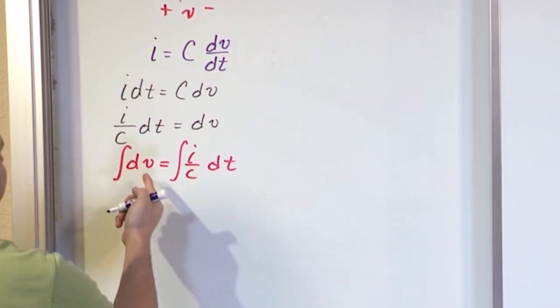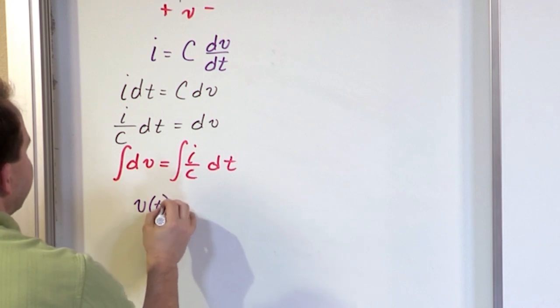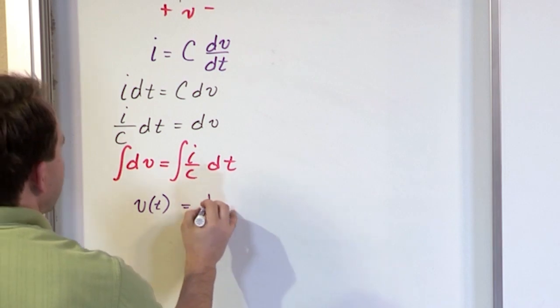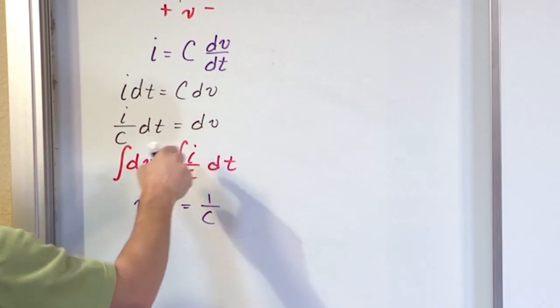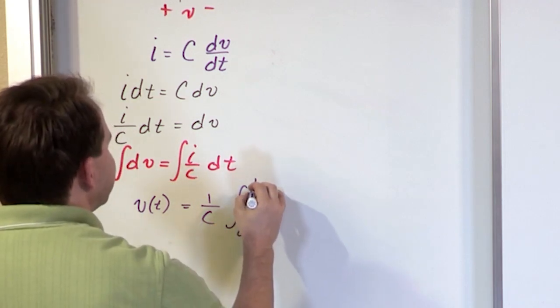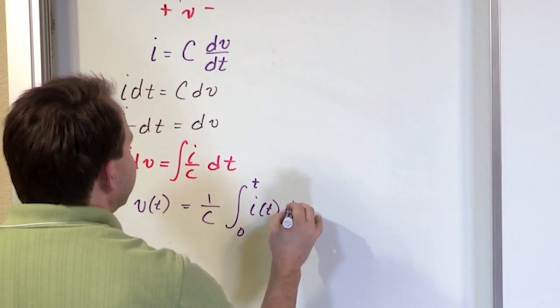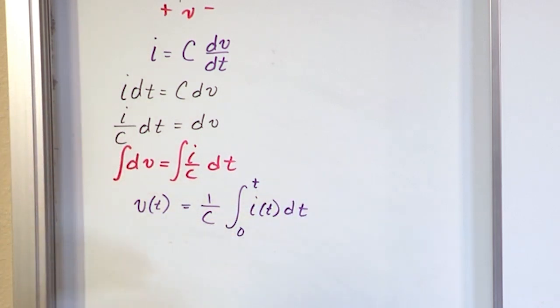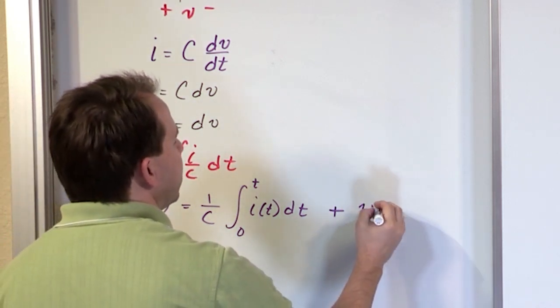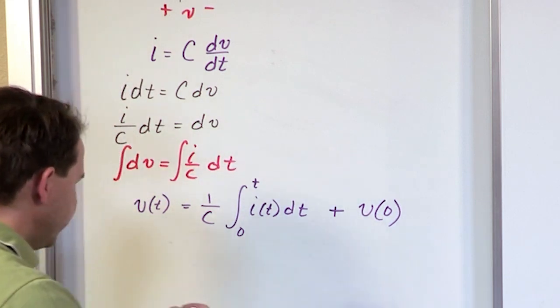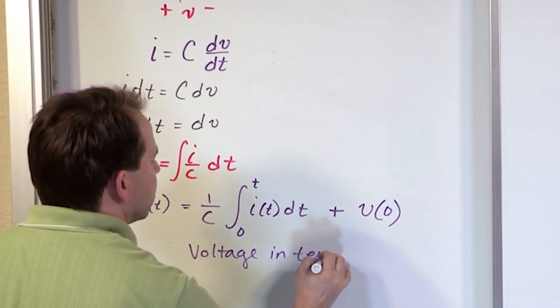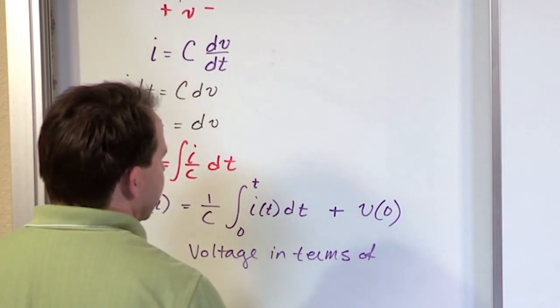So when I integrate dv, you get and recover your v as a function of t, which is what I'm trying to find. And then over here, the one over c is a constant. So the one over c just comes out of the integral, and then I'm integrating i dt. So this will be the integral of zero up to time t of i dt. Now I'm doing this integral, but then you always have a constant of integration when it's over, and so that constant of integration is going to be the voltage at time zero. So this is the voltage in terms of current.